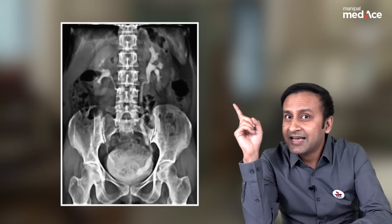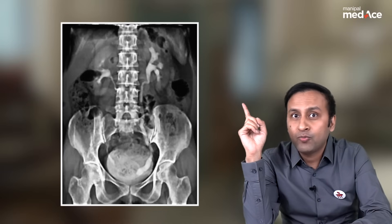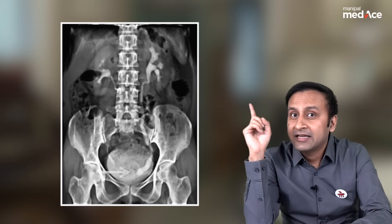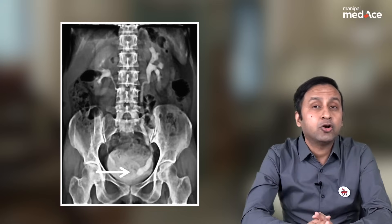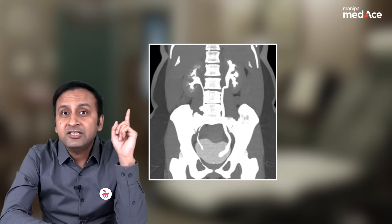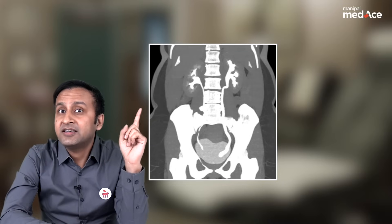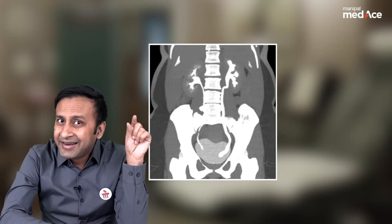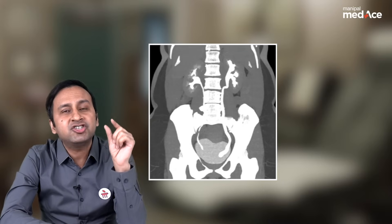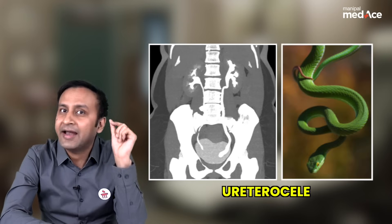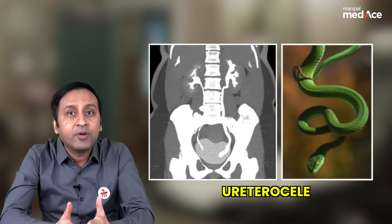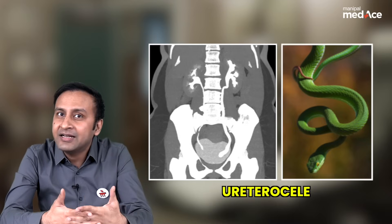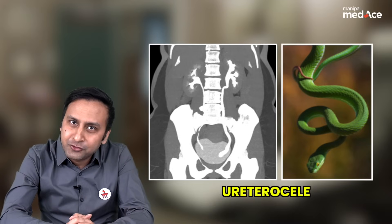Let's look at our second spotter. In this IVP image, there is bulbous dilatation of the left terminal ureter. On the CT urogram image, these findings are seen in much better fashion, and the appearance of this dilated terminal ureter is just like a cobra head or adder head. This appearance is called cobra head or adder head appearance, and the diagnosis is a ureterocele.